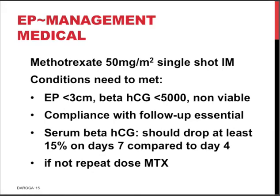The second treatment option is medical. Nowadays, methotrexate 50 milligrams per meter squared as a single intramuscular injection is the treatment of choice, but certain conditions must be met: on ultrasound, the ectopic should be less than 3 centimeters in diameter; the beta-HCG level should ideally be less than 5,000; and we should be dealing with a non-viable pregnancy — not one with an embryo with a heartbeat. Essential also is that the lady is willing to come back for follow-up. The rule of thumb is that the beta-HCG taken on day 7 compared with day 4 should have dropped by at least 15%. If not, a repeat dose of methotrexate may be warranted.